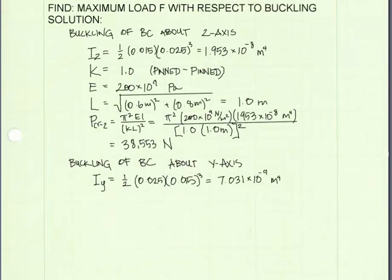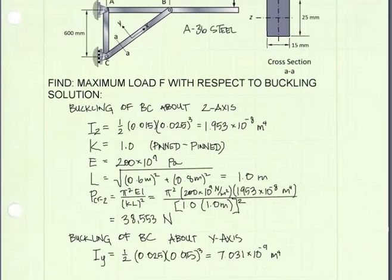When we buckle the member about the Y-axis, our moment of inertia will change. Looking at our cross-section, buckling about the Y-axis, when calculating the moment of inertia, the base will now be the 25 millimeters, the height is 15 millimeters, and that gives us our moment of inertia value shown. It's smaller than the moment of inertia value about the Z-axis. So this is our weak-axis moment of inertia.